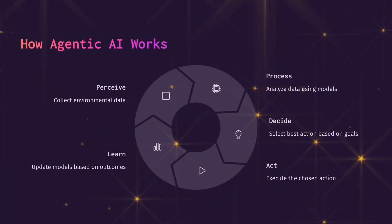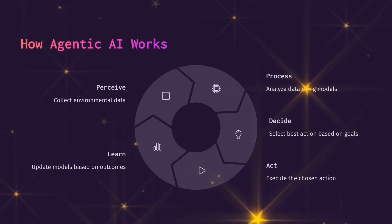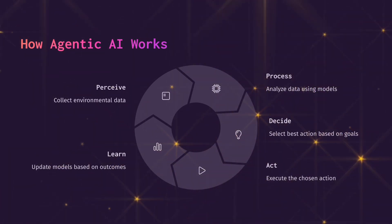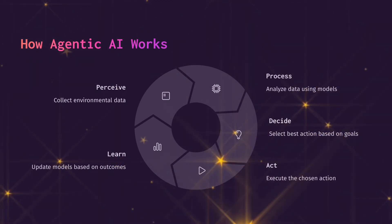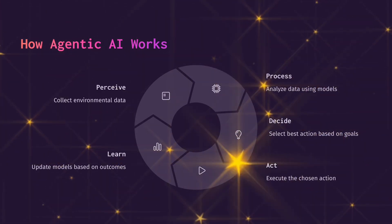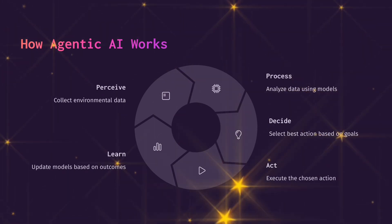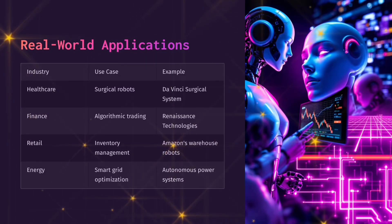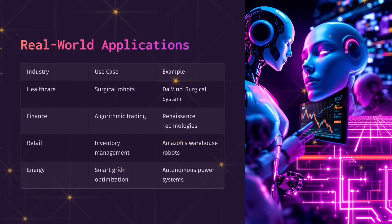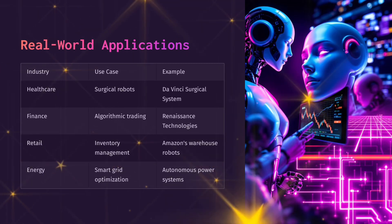How Agentic AI works: Perceive — collect environmental data. Process — analyze data using models. Decide — select the best action based on goals. Act — execute the chosen action. Learn — update models based on outcomes.